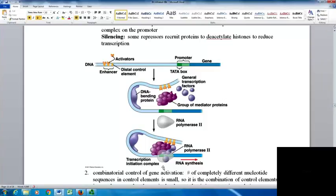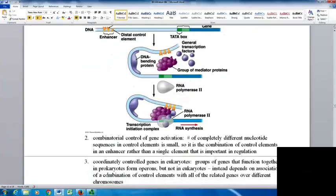For silencing, some repressors recruit proteins that deacetylate histones to reduce transcription. We use combinatorial control of gene activation—there's a limited number of completely different nucleotide sequences in control elements, so we use combinations of control elements in an enhancer. This is like making complex passwords: a four-digit password using only numbers has limited combinations, but including letters, numbers, and symbols greatly increases the combinations.